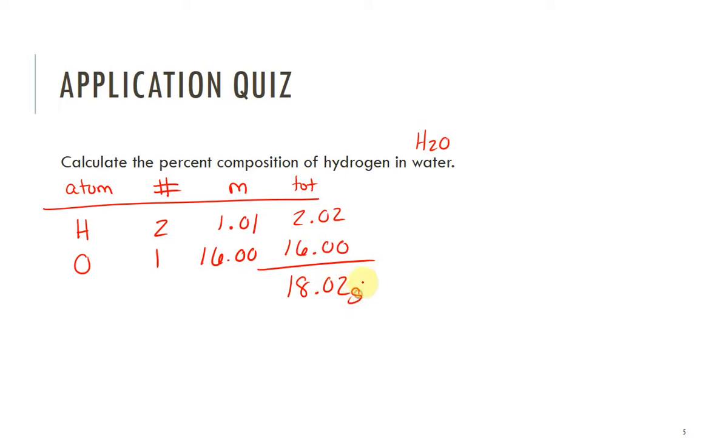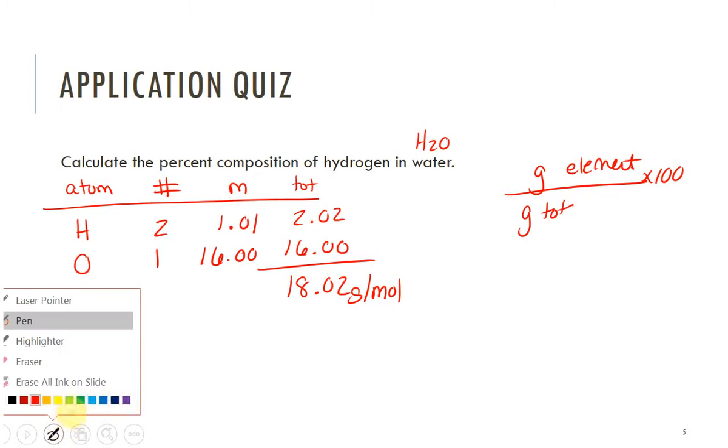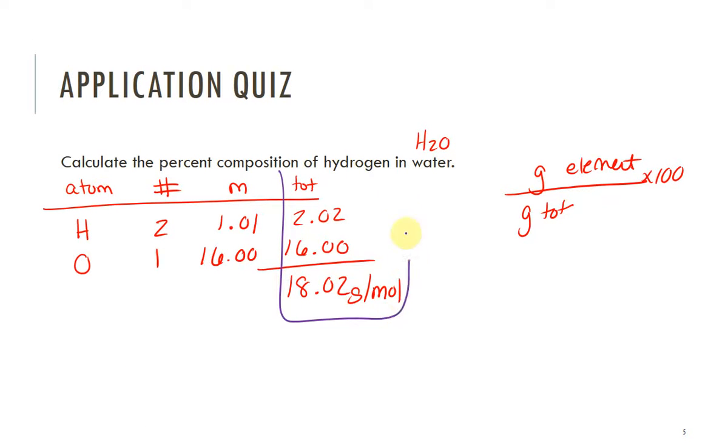Now percent composition takes the grams of an element over the total grams of the compound times 100. The reason I like this table is because it sets you up. You take the amount from the one element from this total column and the amount from the compound itself, and you plug it in.